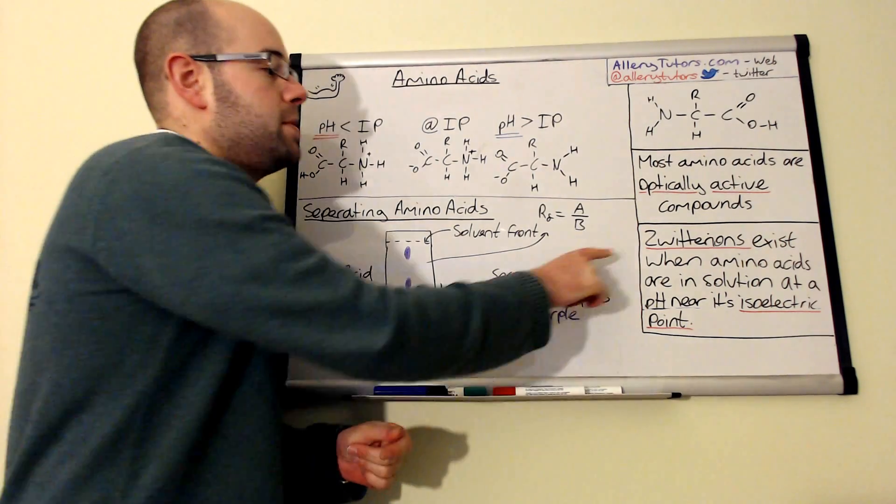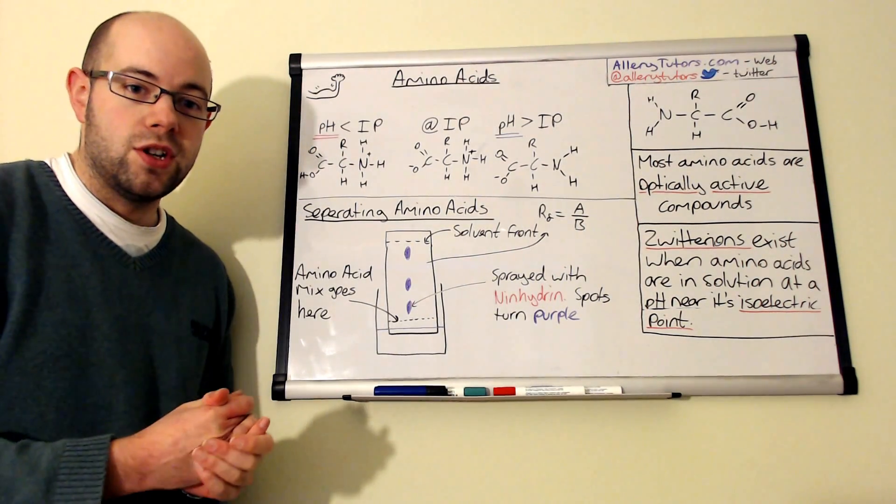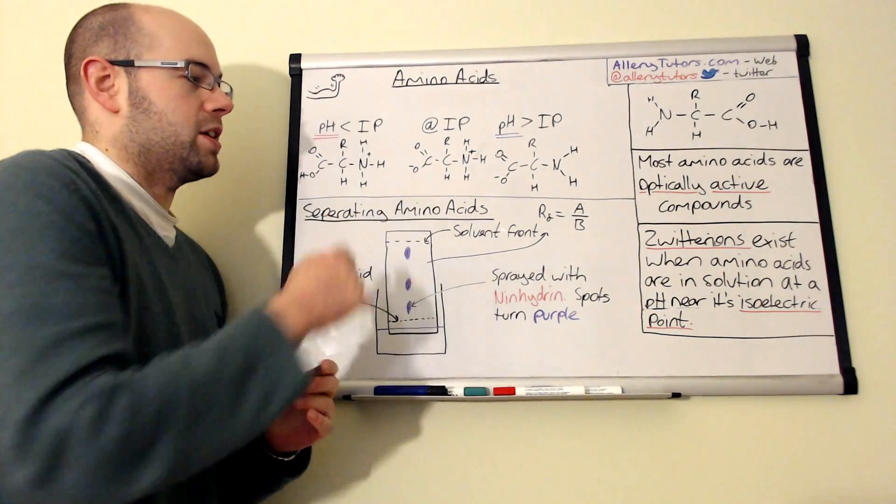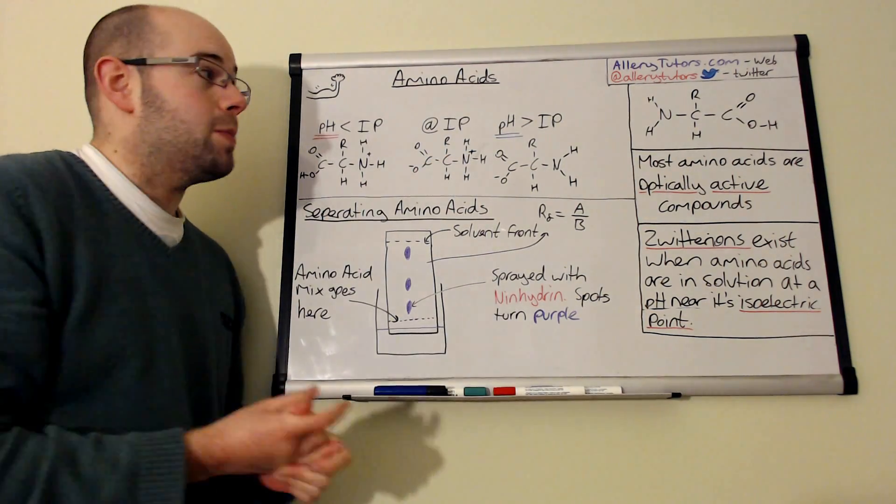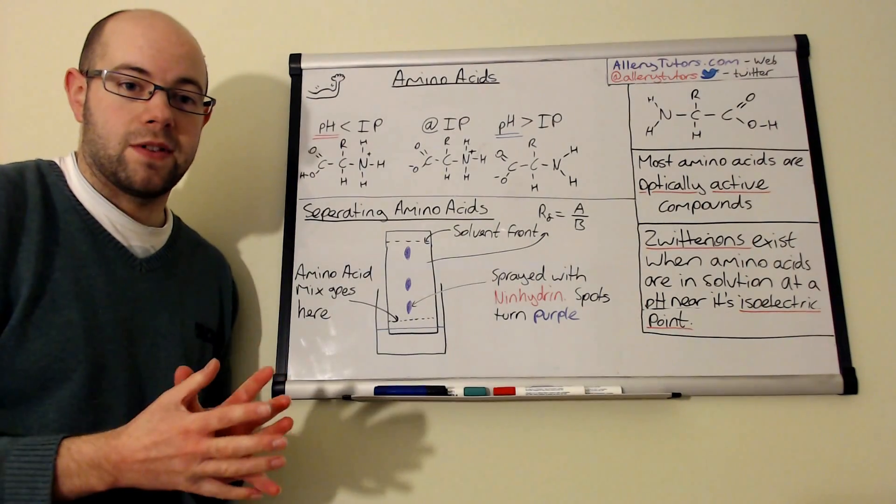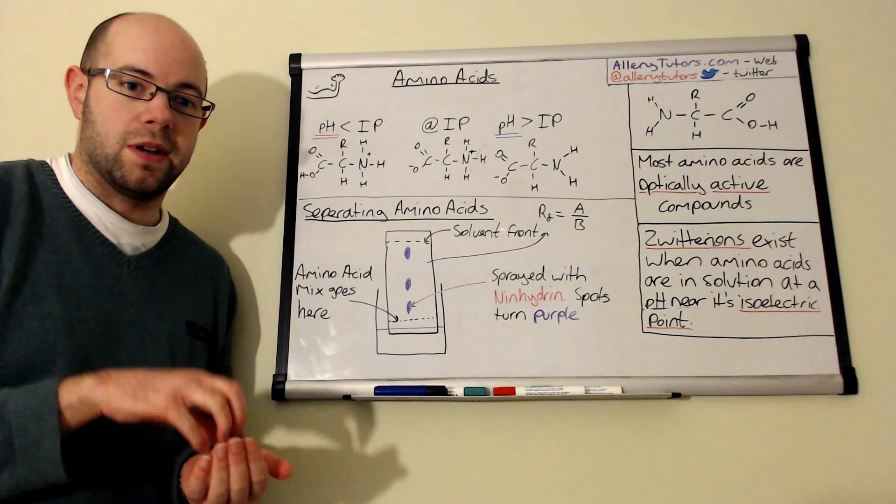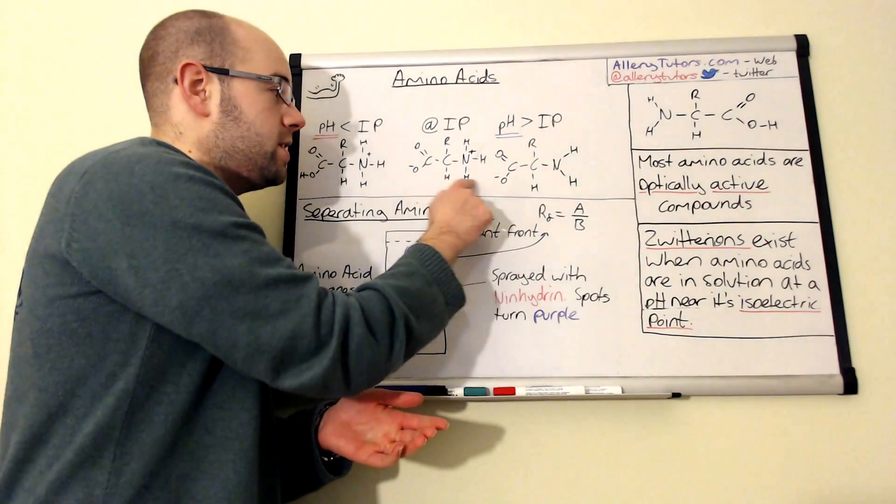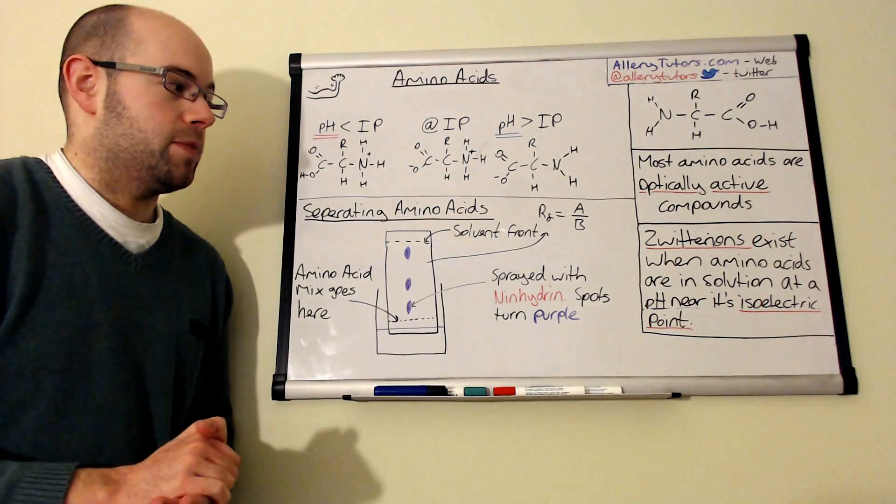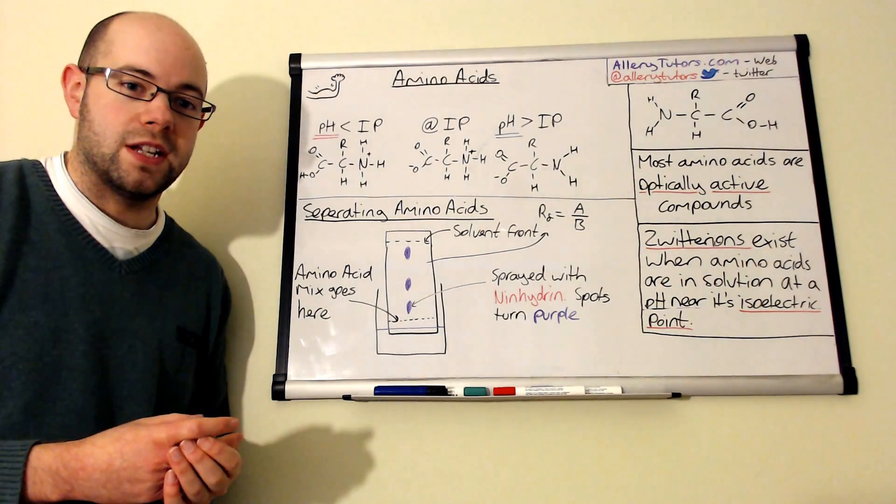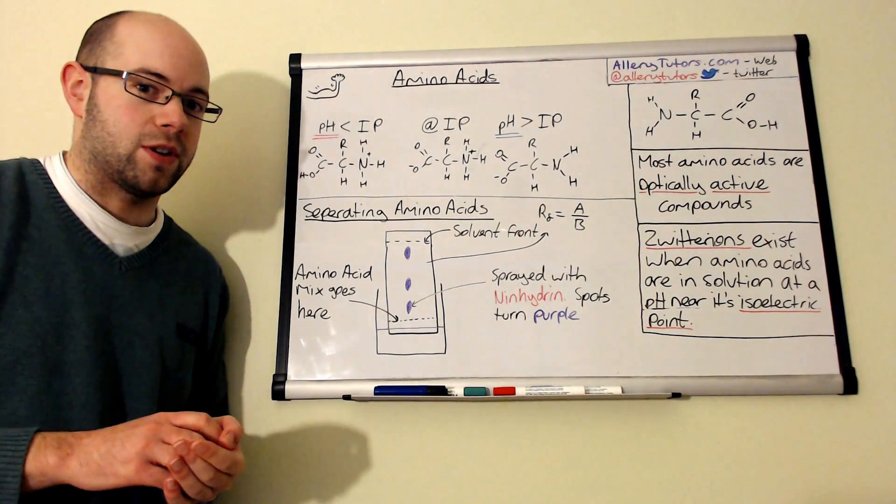So zwitterions are amino acids that actually have two different charges attached to them. So these have a positive charge and we actually have a negative charge. And when we take a solid amino acid, which is this here, it obviously doesn't have any charges, but the moment we add it into a solution, we can form a zwitterion, which is one of these, a double ion, providing that that solution is at the pH that is near that amino acid's isoelectric point.